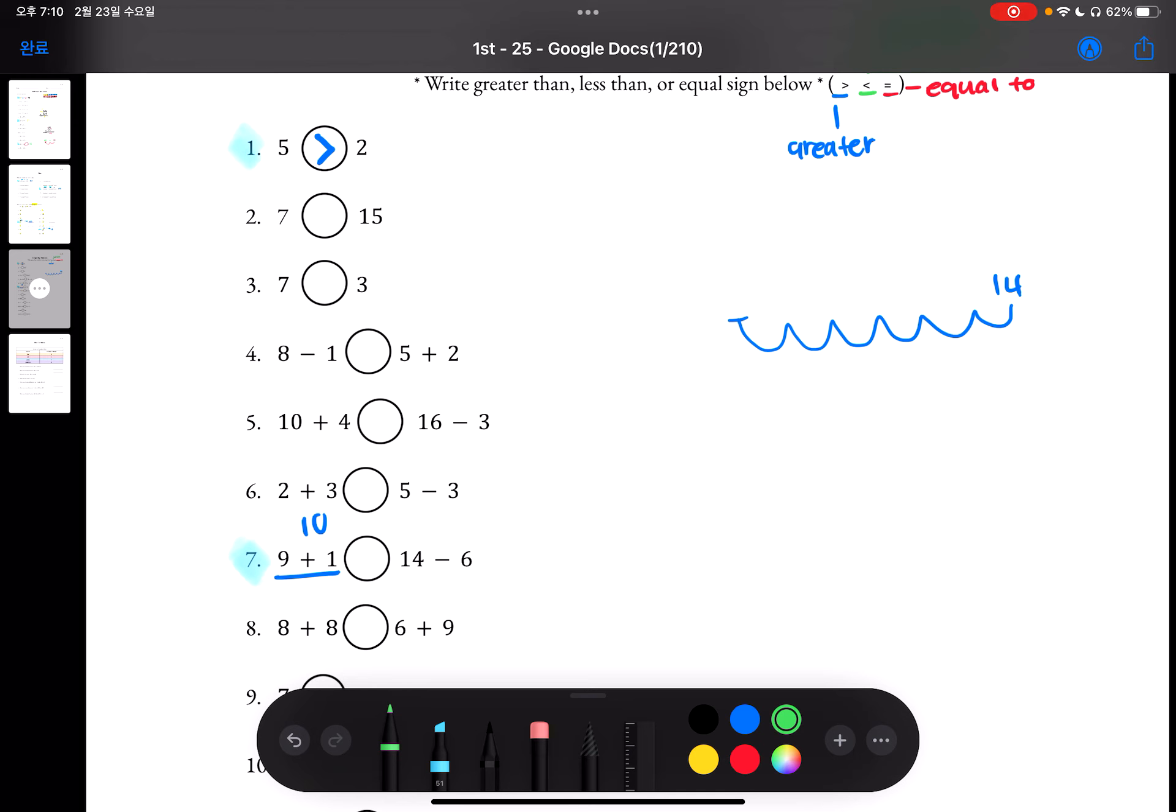When we count, we'll get 14, 13, 12, 11, 10, 9, 8. So we know that it's 10 versus 8. We know that 8 comes before 10. So we know that 10 is greater than 8. So the answer would be 9 plus 1 is greater than 14 minus 6.